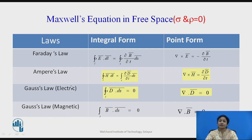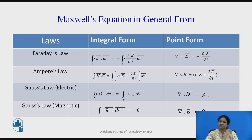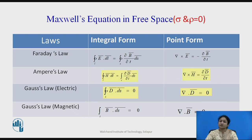Now, how are Maxwell's equations represented in free space? In free space, sigma and rho_v equal zero. When we replace sigma and rho_v with zero in the general equations, these four equations are reduced. This table is a representation of Maxwell's equations in free space, considering sigma equals zero and rho_v equals zero.